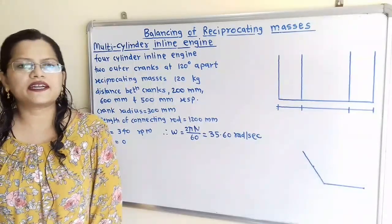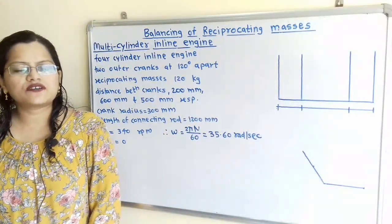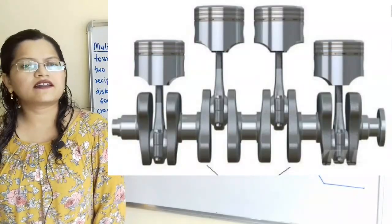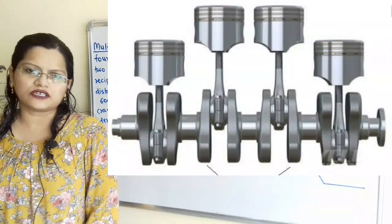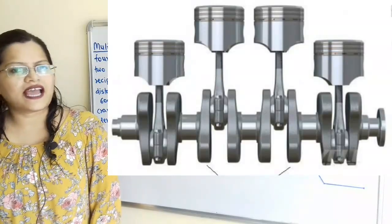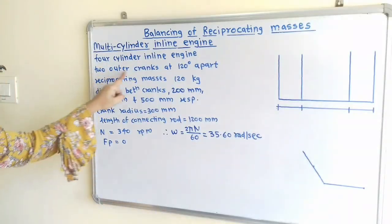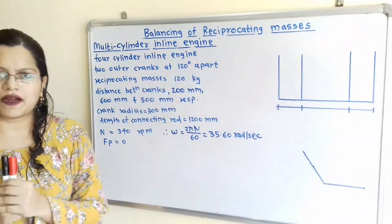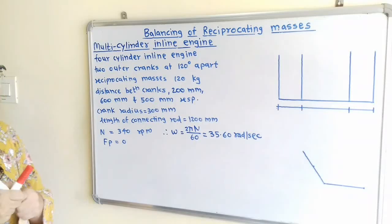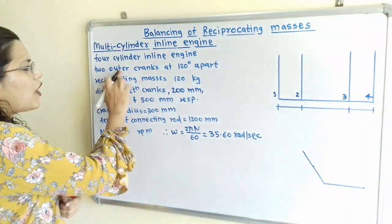Let us understand the given data and draw the diagram for the position of planes as well as angular positions. This is a question for the 4-cylinder inline engine. In an inline engine, the center lines of the cylinders are parallel to each other and the cylinders are placed in one plane. The reciprocating masses and rotating masses attached to these cylinders are rotating in different planes.